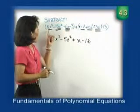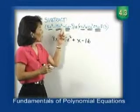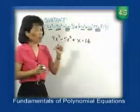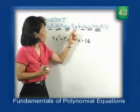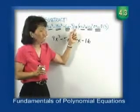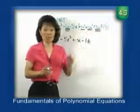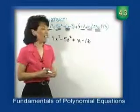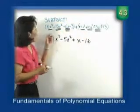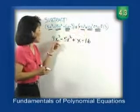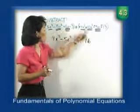So when I subtract these two polynomials, I change it to an addition problem by changing the subtraction sign to addition, thus changing every sign within the second polynomial to the opposite sign. Collecting like terms and remembering not to touch the variable portion, my solution is 9x to the 3rd minus 5x squared plus x minus 16.